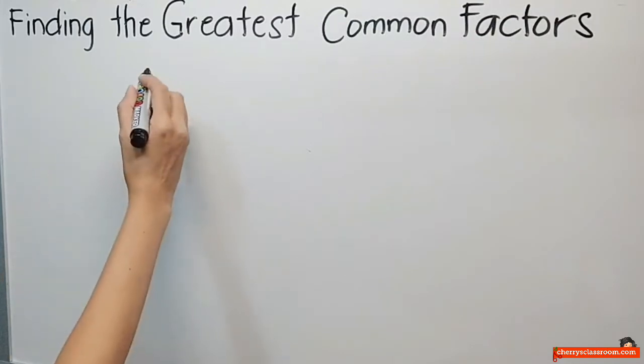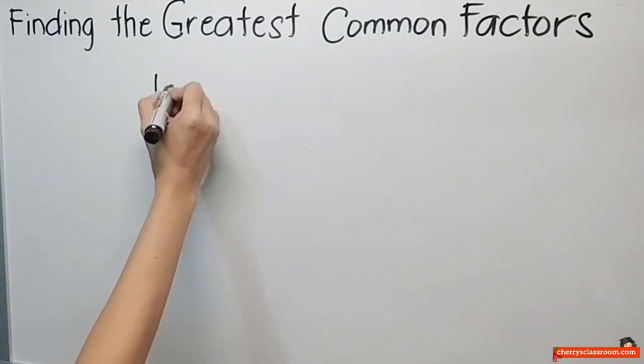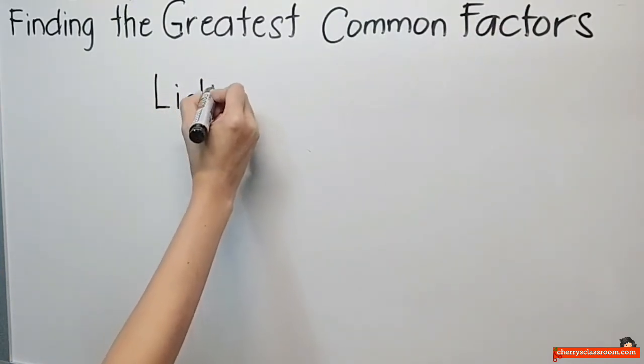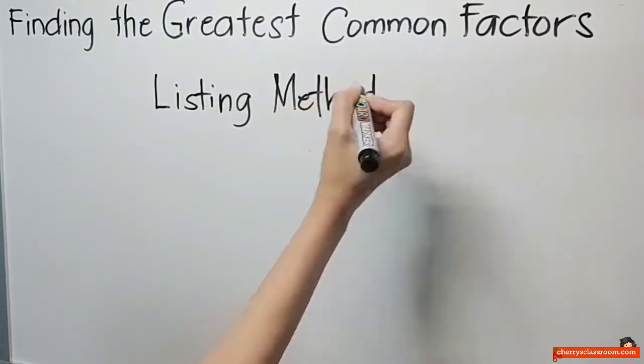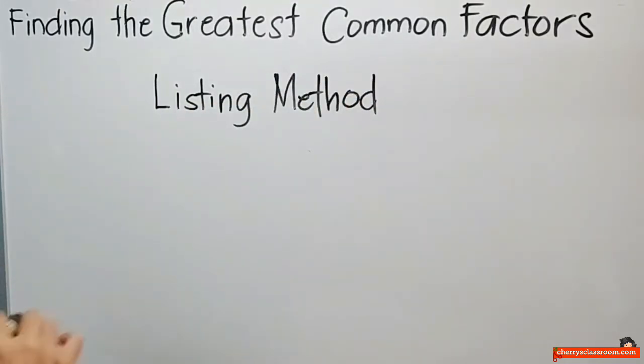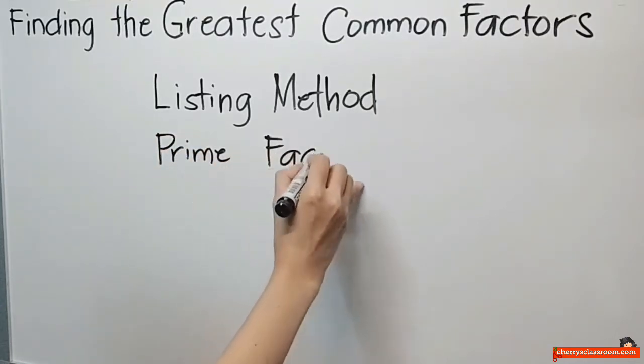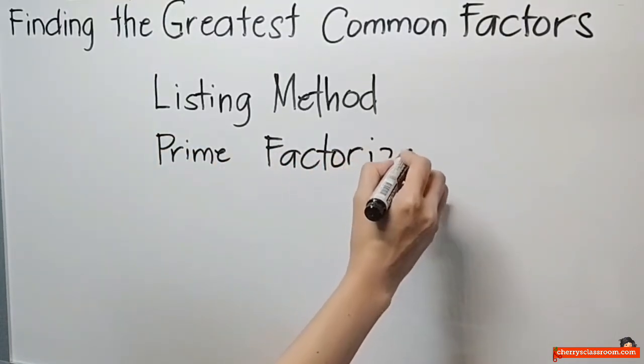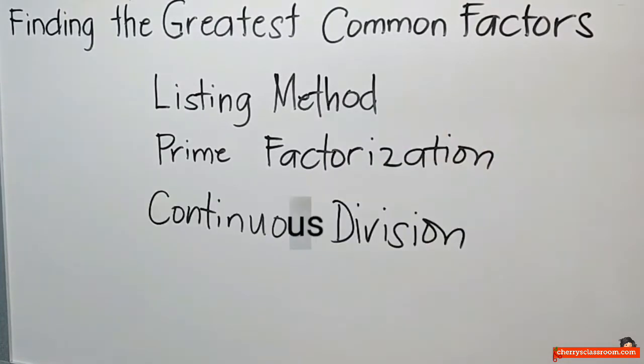Ano-ano yung tatlong yun? Una, ang tinatawag na listing method. Pangalawa ay ang prime factorization. At ang continuous division.